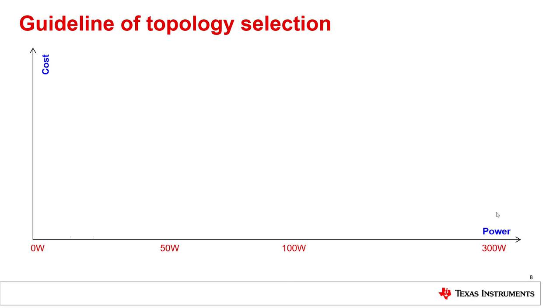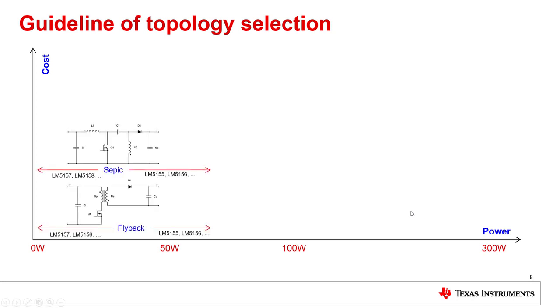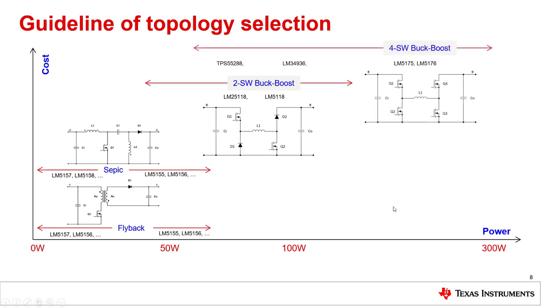But which topology to select? This is a short guide based on power and cost. If your application has an output power of 50 to 100 watts, a good solution is either a flyback or a SEPIC converter. For higher power up to maybe 200-250 watts, you might have a look at the 2-switch buck-boost converter. The 4-switch buck-boost converter can be used up to 300 and 350 watts. These numbers show you component numbers from Texas Instruments which can control this type of topology.